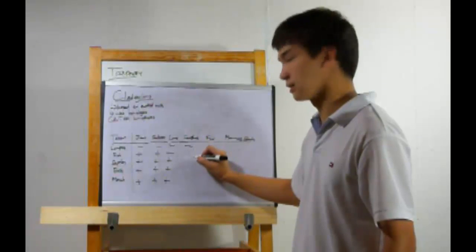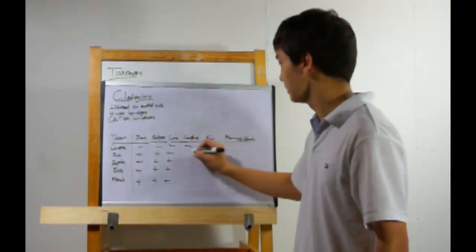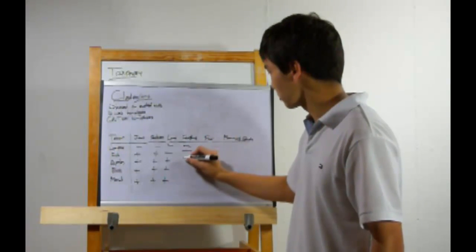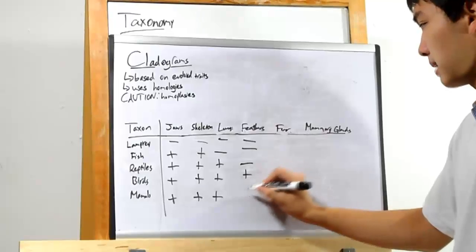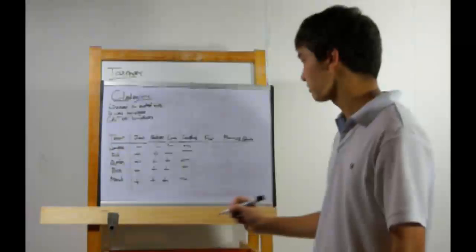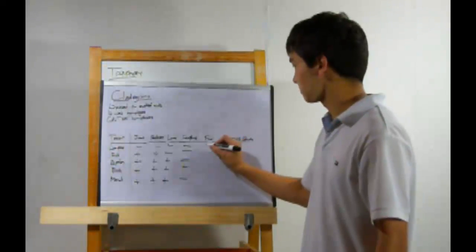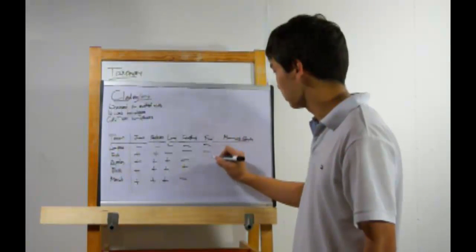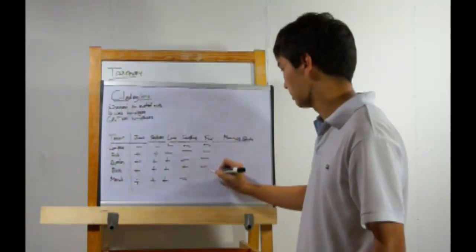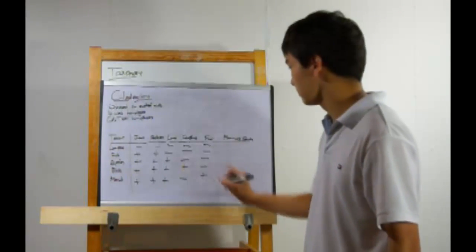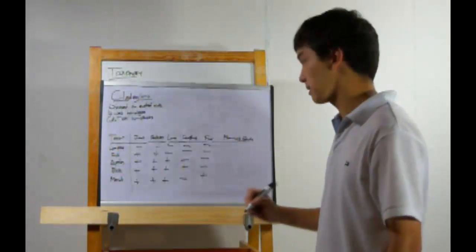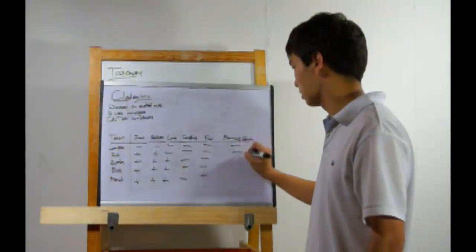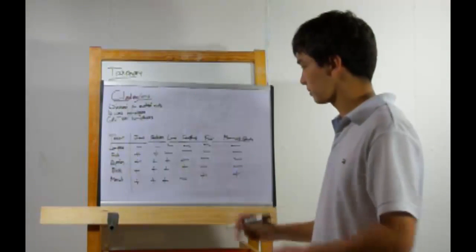Fur: lampreys, no fur. Fish, no fur. Reptiles, no fur. Birds, no fur. Mammals — fur. Finally, mammary glands: no, no, no, no for the first four groups, and yes for mammals.